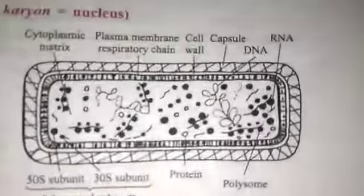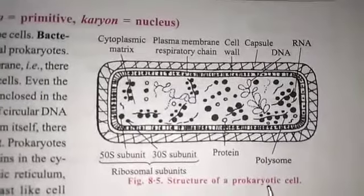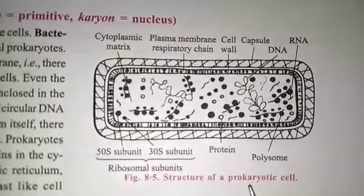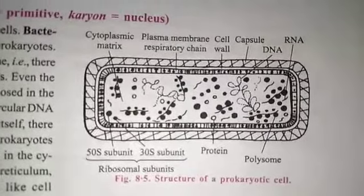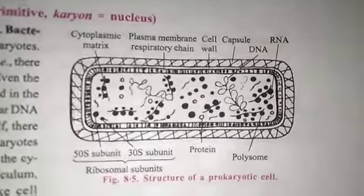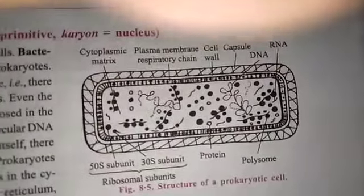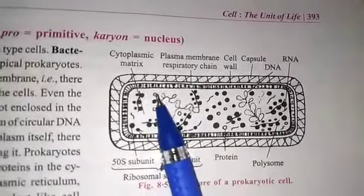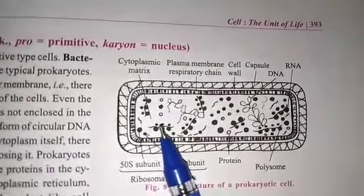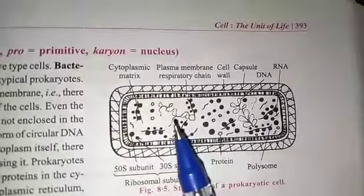See this structure? This is the structure of prokaryotic cells. Prokaryotic cells are the first type of cell. We can see many bacteria and algae within these cells.